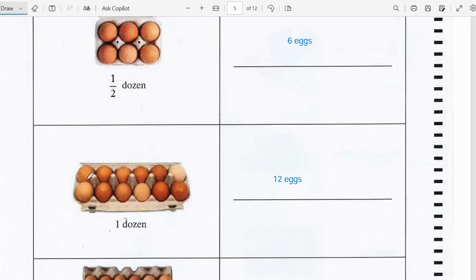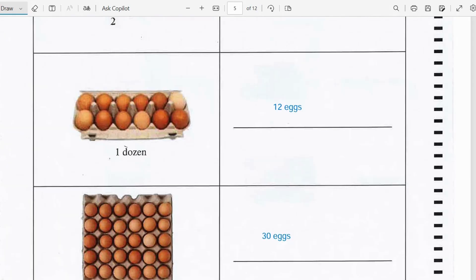Now for a dozen eggs we'll have 1, 2, 3, 4, 5, 6 which is a half dozen and then another 6 which is 12 eggs.